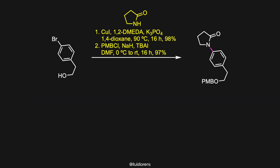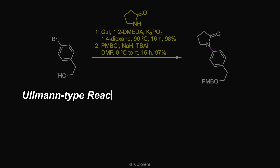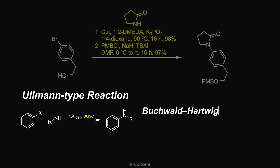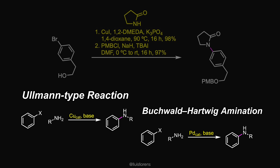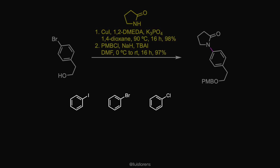The synthesis begins with a Ullmann coupling between the aryl bromide and pyrrolidinone using catalytic copper iodide and dimethylethylenediamine to give the coupled product in near quantitative yield. The Ullmann-type reaction is a copper-catalyzed nucleophilic aromatic substitution between nucleophiles such as amines with aryl halides. It is an alternative to the Buchwald-Hartwig amination, which is catalyzed by palladium. Aryl iodides, bromides, and chlorides are good substrates with the following reactivity trend.